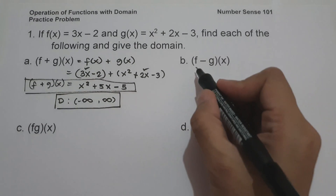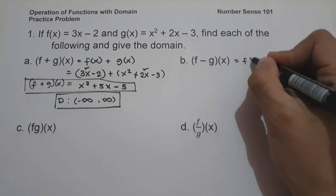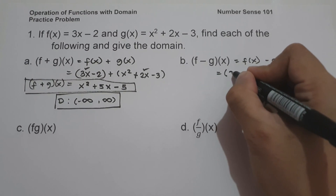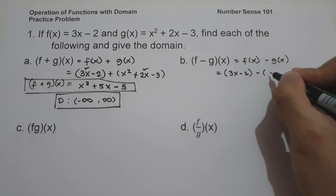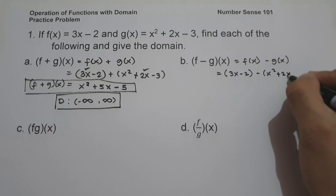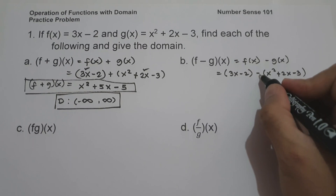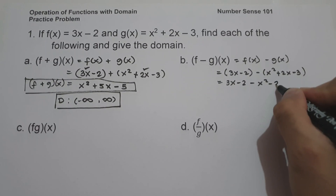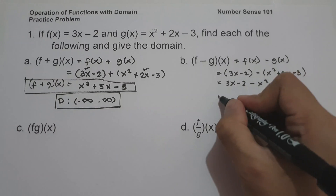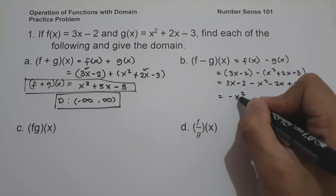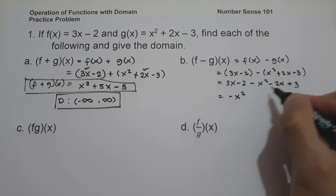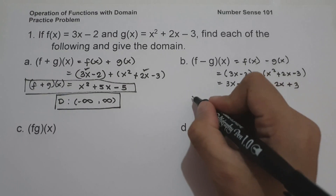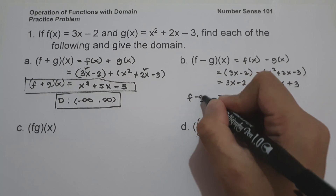On letter b, we have (f−g)(x) = f(x) − g(x), which is (3x − 2) − (x² + 2x − 3). Distributing the negative sign gives 3x − 2 − x² − 2x + 3. Combining like terms: −x², then 3x − 2x = x, and −2 + 3 = 1. So (f−g)(x) = −x² + x + 1.